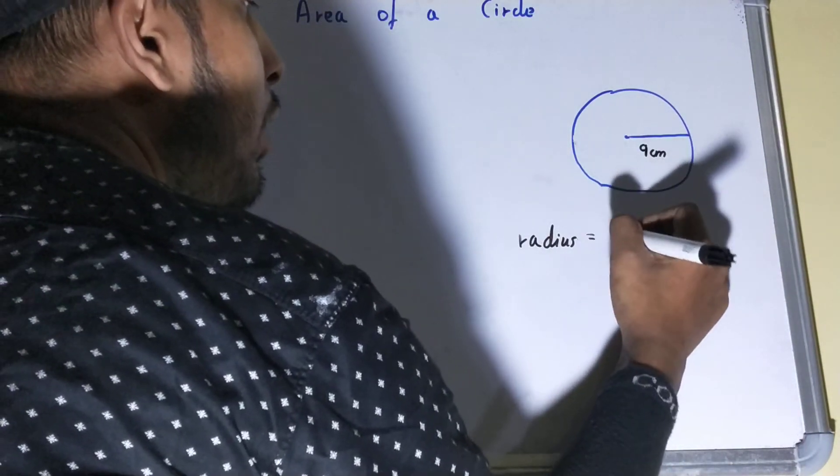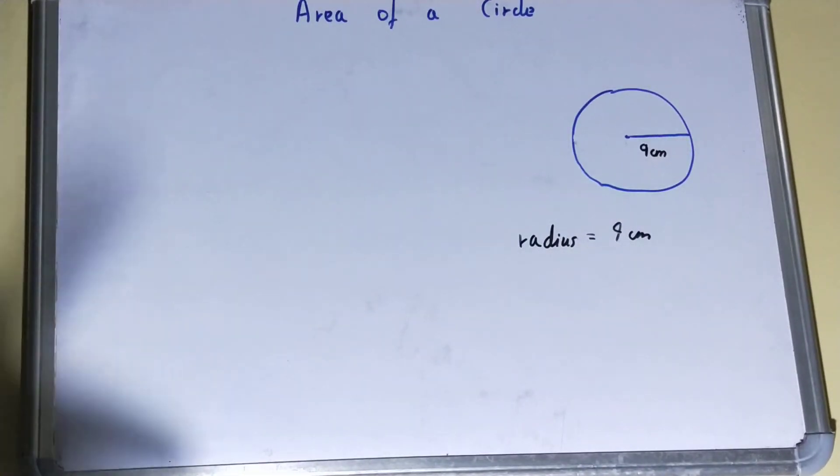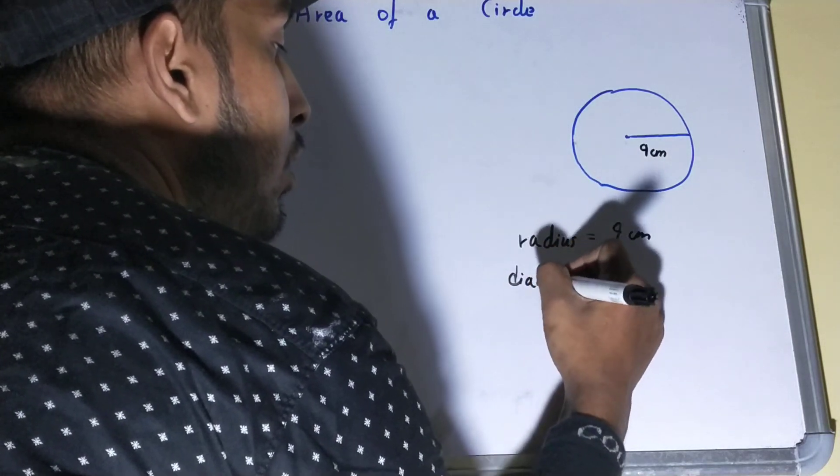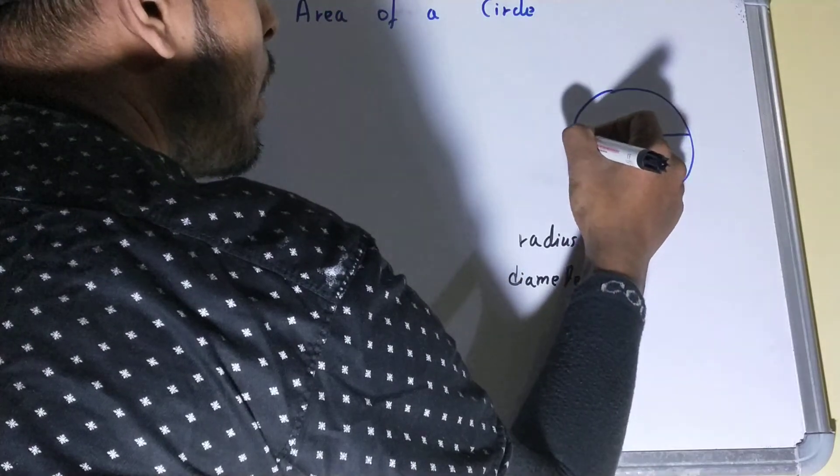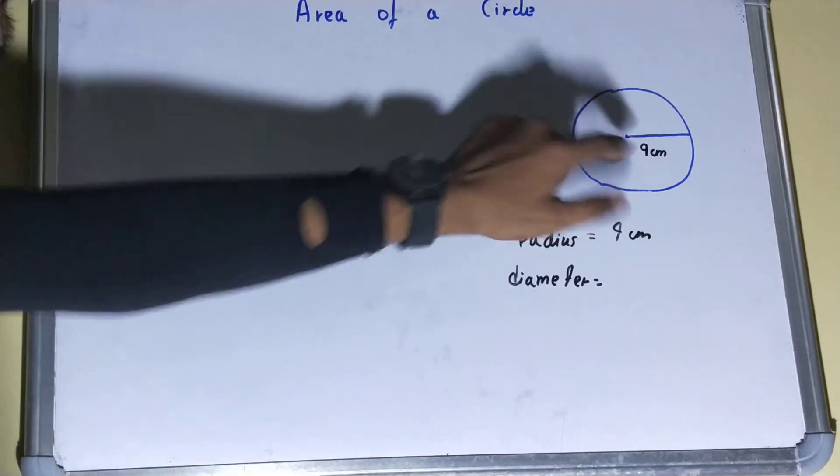Sometimes in exams or in tests, you will be given diameter rather than radius. So what is this diameter? Diameter is basically the complete distance between the boundaries passing through the center. That is just double of the radius.